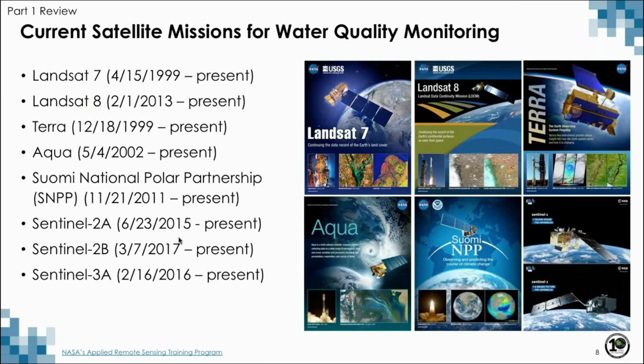Also in the first part, we reviewed some current satellite missions that are used for water quality monitoring. We are in a golden age of remote sensing for water quality, and this has left us with a long time series of observations. Please take a moment to look at each of these satellite missions. This is a rich data set to mine to understand current water quality questions, and to begin to understand how aquatic systems have changed since the beginning of the time series.